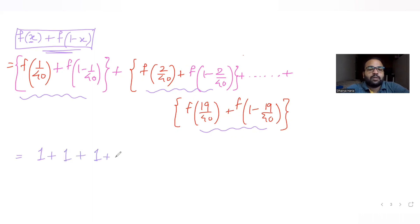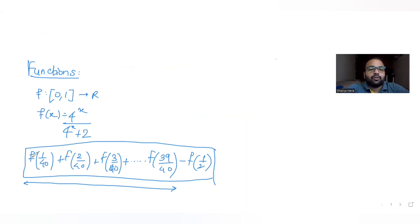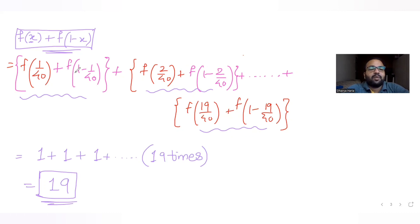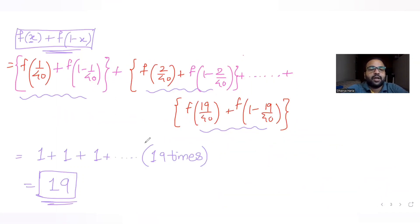Since f(x) + f(1 - x) = 1 for every pair, and we have 19 such pairs, the sum is 1 + 1 + 1... done 19 times. So the answer for the entire expression is 19. The correct answer for the question turns out to be 19.